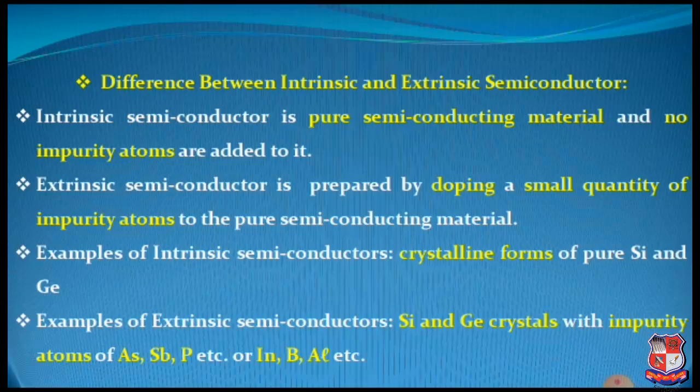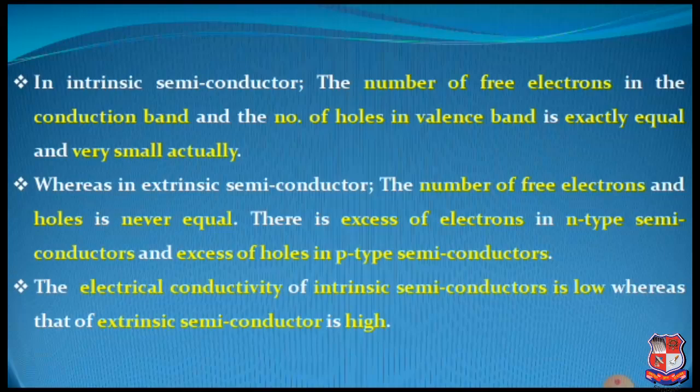These two different groups will be further classified in our next article on N-type and P-type semiconductors. In an intrinsic semiconductor, the number of free electrons in the conduction band and the number of holes in the valence band are exactly equal, and both these numbers are in very small quantity. Whereas in an extrinsic semiconductor, the number of free electrons and holes will never be equal, because it depends on the impurity — by adding a particular impurity, either it will have an excess amount of electrons or an excess amount of holes.